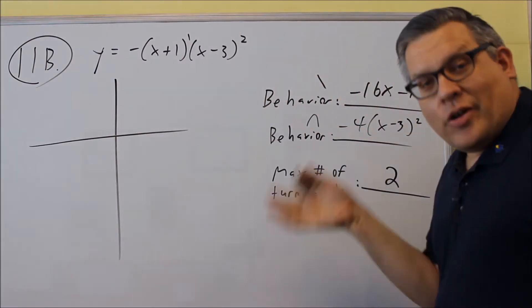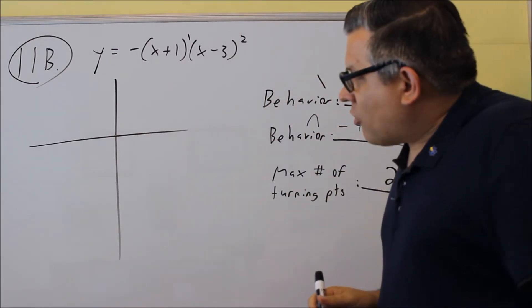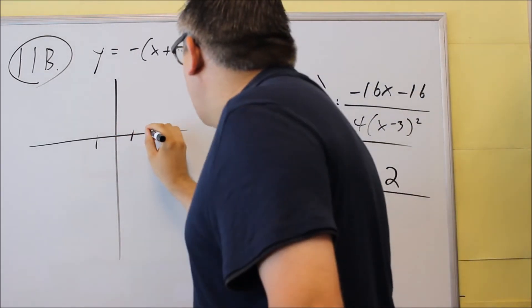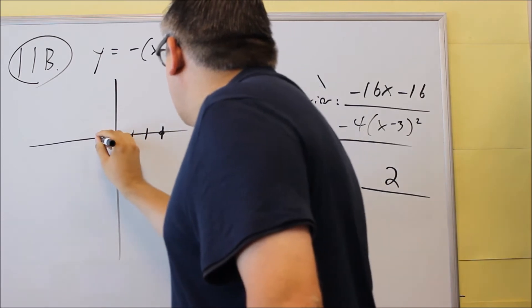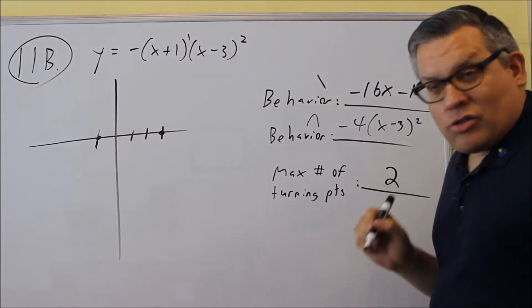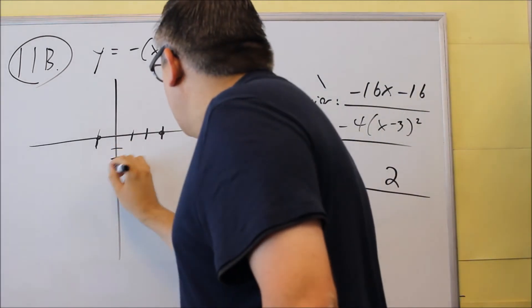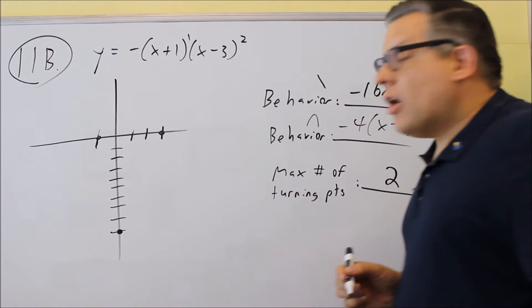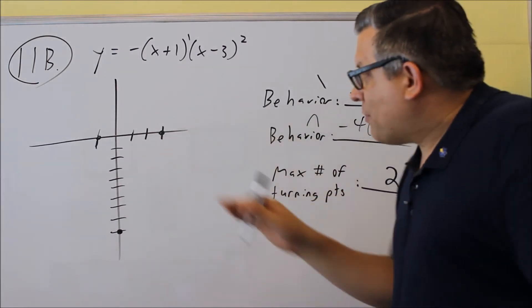So I'm going to leave the behaviors up here and erase this part. Let's go ahead and put everything together on the graph. First of all, we have the intercepts. So of course, it crosses at our zeros that we had before. The graph is going to cross at negative one and also at positive three. The graph also goes through negative nine. So I do that part first.